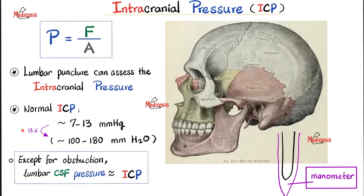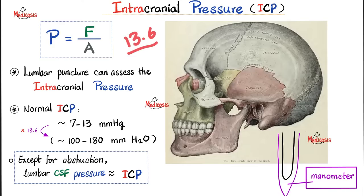What is the normal intracranial pressure? It's about 7 to 13 millimeters of mercury in the normal adult — slightly lower in infants. If you want to measure it in millimeters of water, since the density of mercury is 13.6 times greater than that of water, you multiply each number by 13.6 to get the equivalent range.